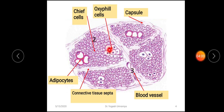Oxyphil cells have no important function and no secretory material. They are considered a resting stage of the chief cells. Oxyphil cells appear around the age of puberty. The third type of cell found within the lobule of the parathyroid gland is the adipocyte — fat cells with a signet ring appearance. They start to appear with advancement of age, and in aged persons approximately 50 percent of the tissue is occupied by adipocytes.